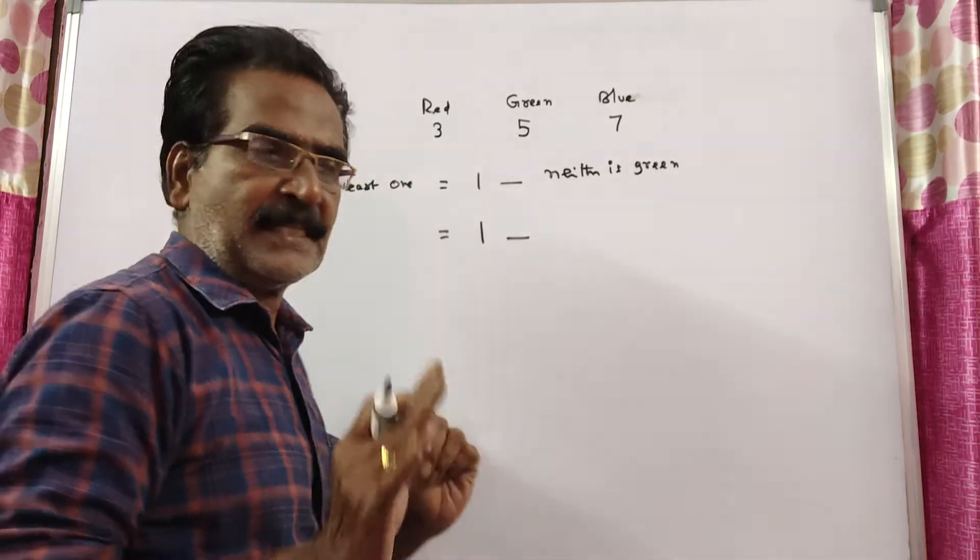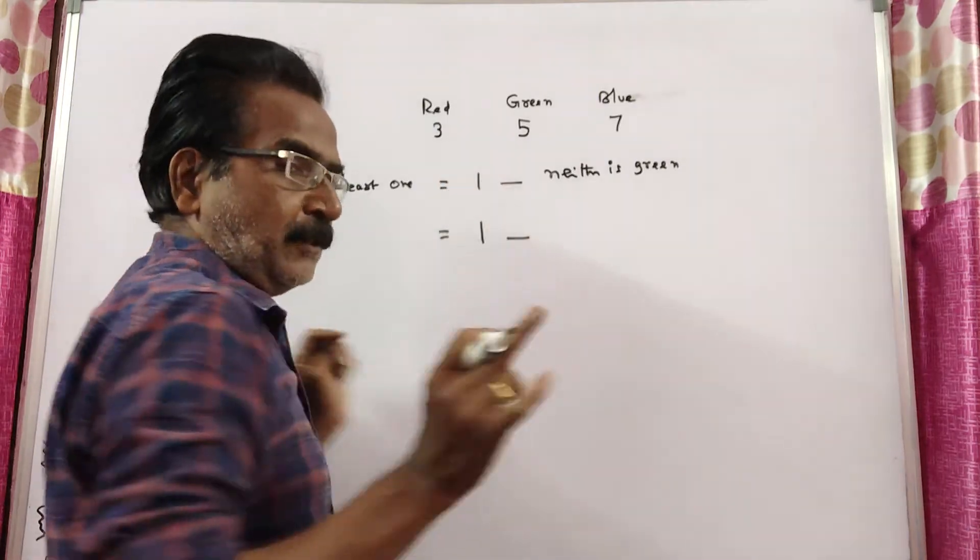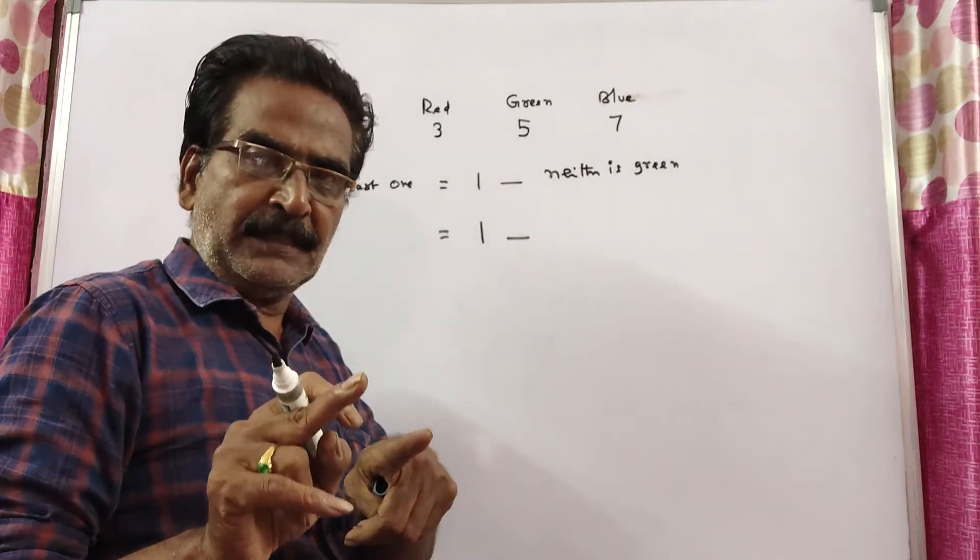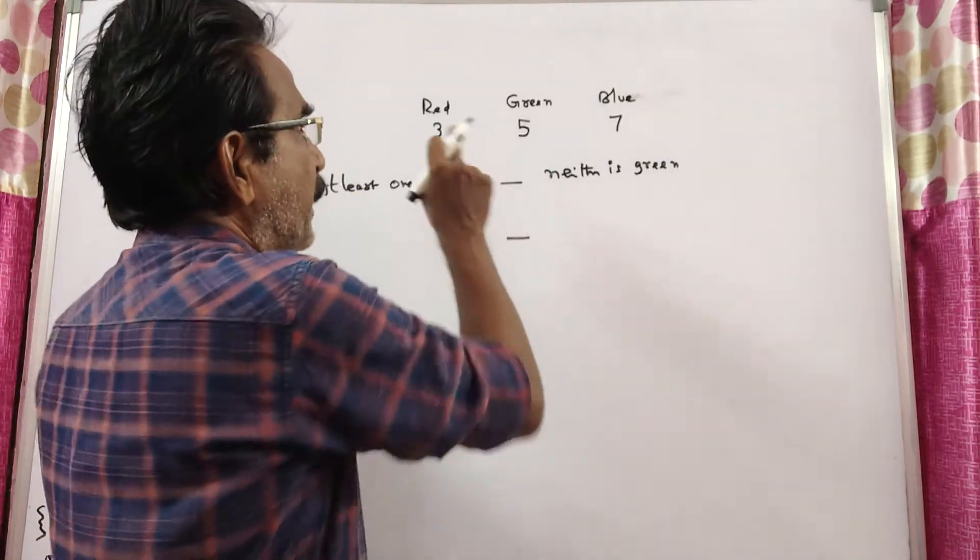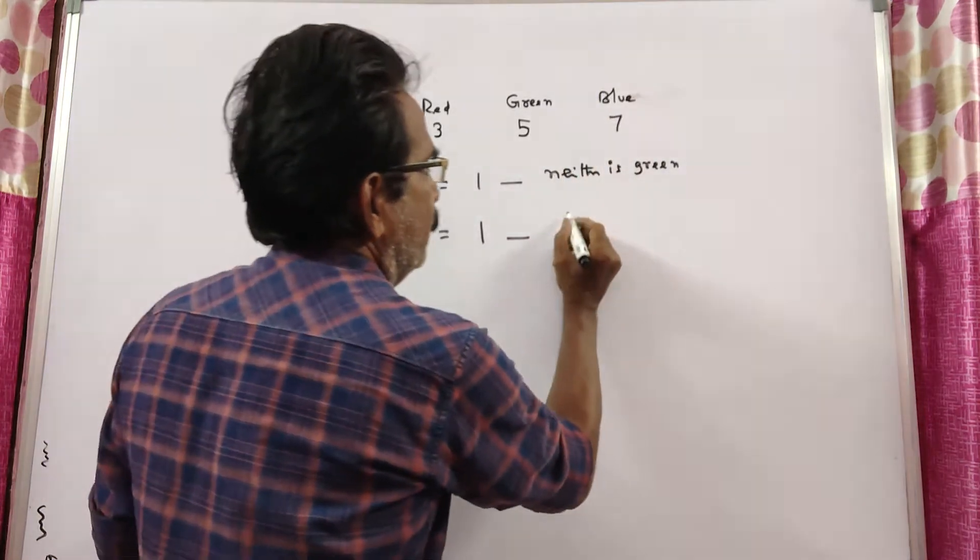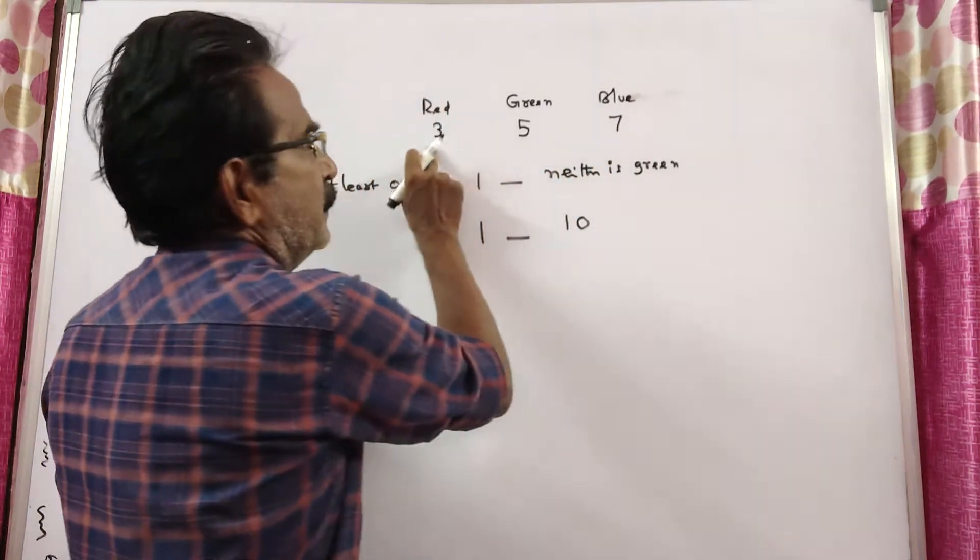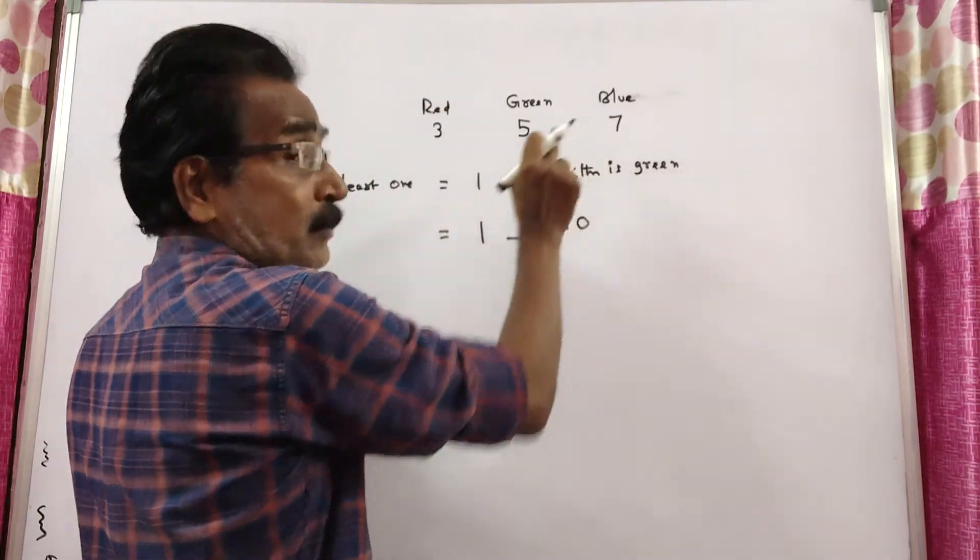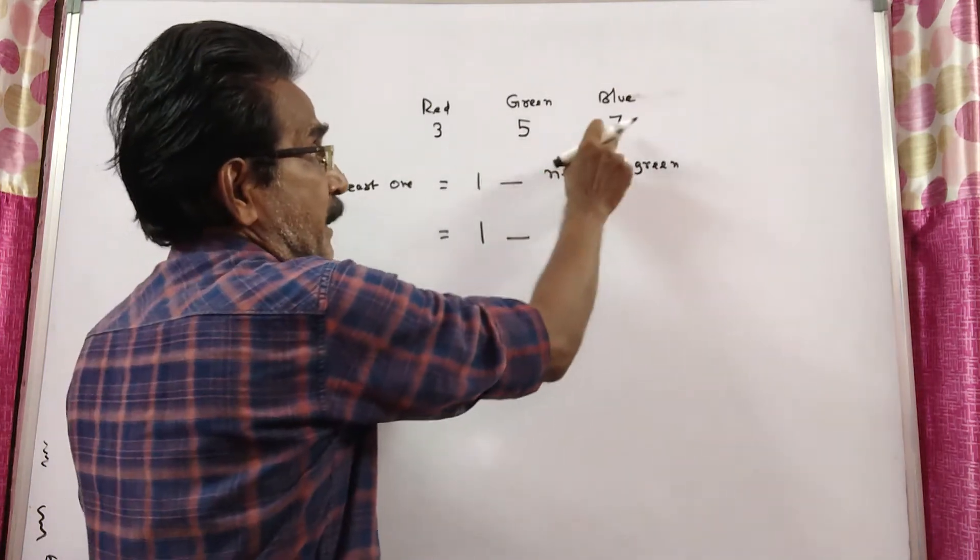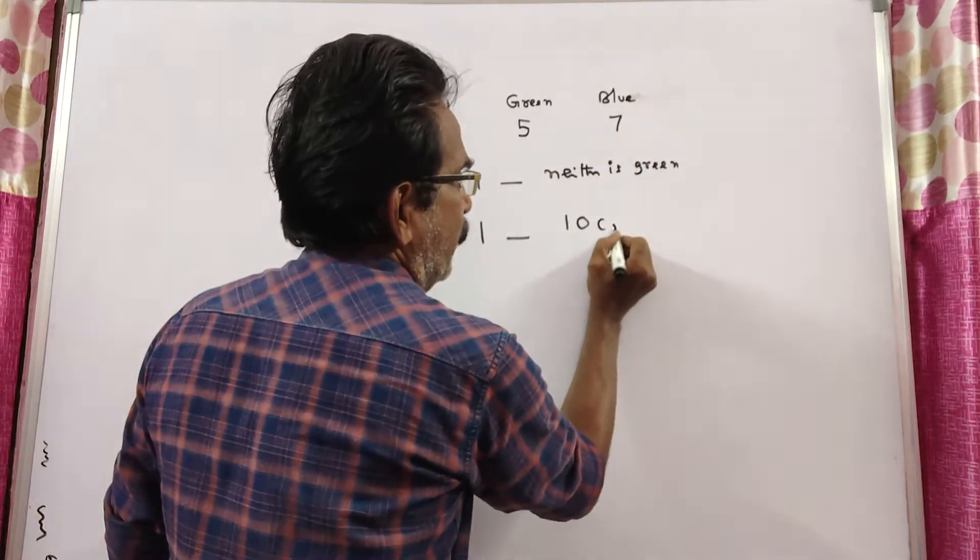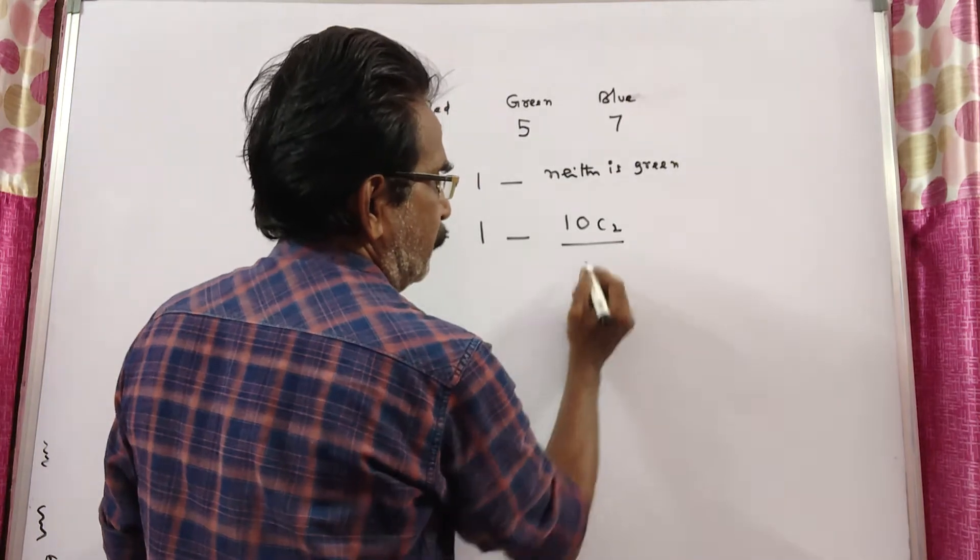Neither of the 2 balls is green means the 2 balls must be drawn from 3 plus 7, these 10 balls. That is possible in 10 C2. This is favorable cases.